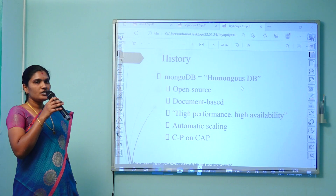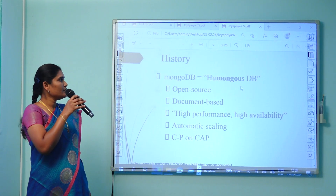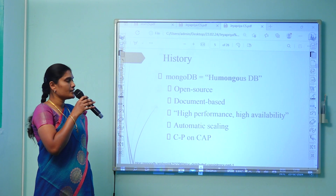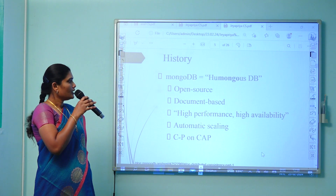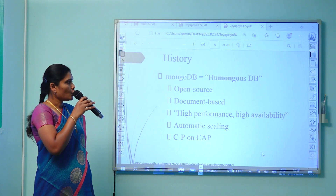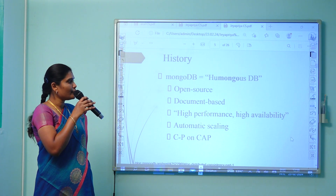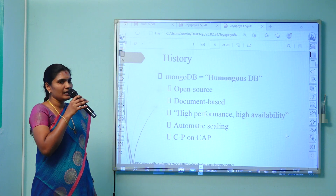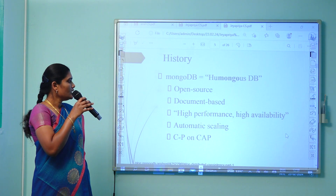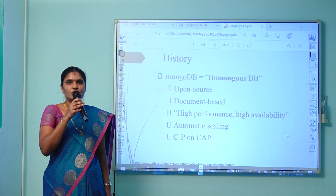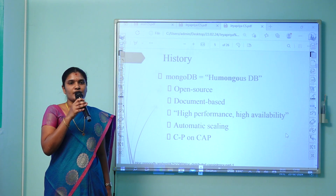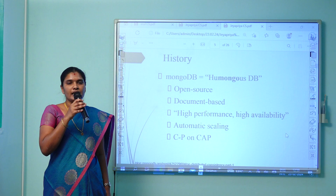The word MongoDB is derived from the keyword HumongousDB. It is an open source, document-based database. It is a high-performance, high-availability database. It performs automatic scaling. It works under the principle of CAP theorem, where C stands for consistency, A stands for availability, and P stands for partition tolerance.